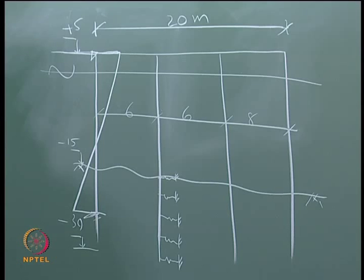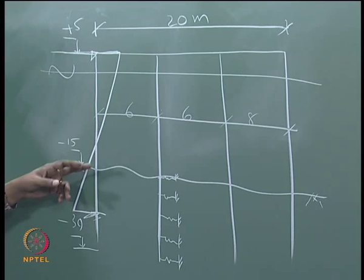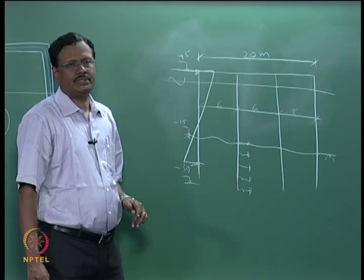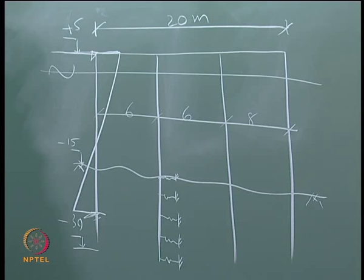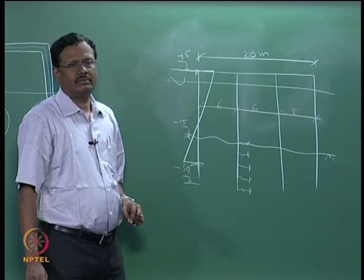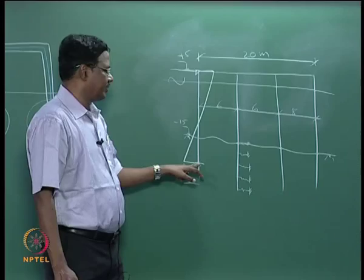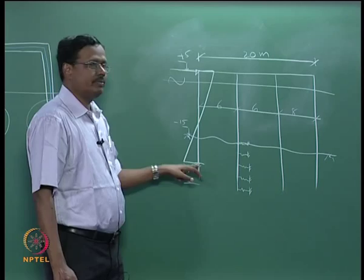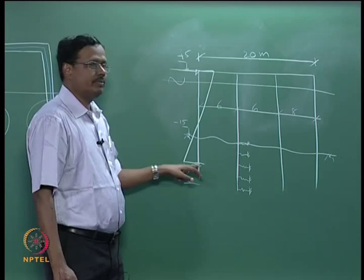Using spring idealization with spring spacing equal to the pile diameter, the bending moment diagram will differ from the fixity depth method. The major change in bending moment occurs at the top point — where the boundary condition has been changed — not at the fixity point.